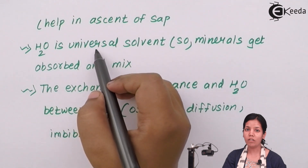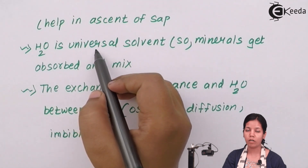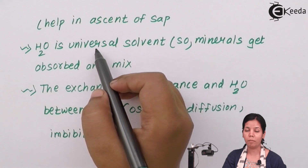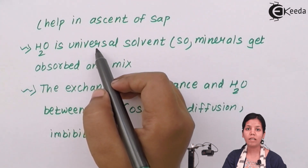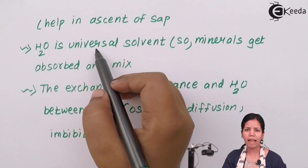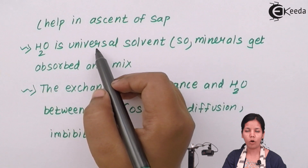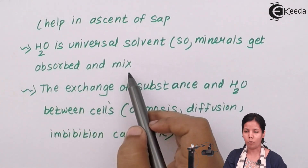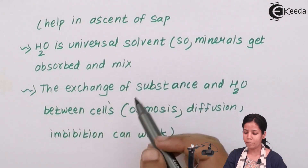Water is a universal solvent. So all the minerals — whether it is potassium, calcium, magnesium, molybdenum, or zinc — which are present inside soil, which are important for plant growth, for the repair and wear and tear of the plant, and whose deficiency can cause damage to plants, are absorbed and mixed by water.